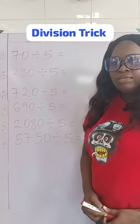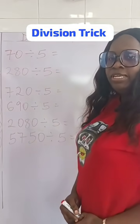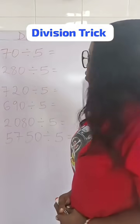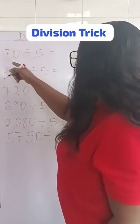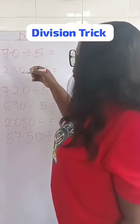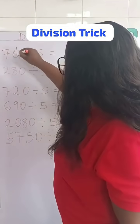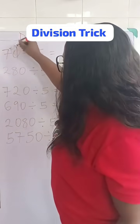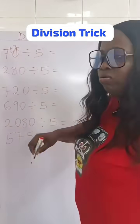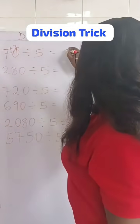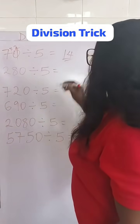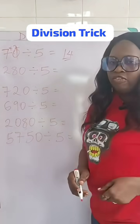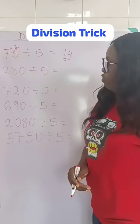Let's look at 70 divided by 5. How do we go about it? Instead of doing 70 divide by 5 the long way, just cancel the 0 and multiply 7 by 2, which is 7 times 2 equals 14. So we are going to have 14 as our answer. 70 divided by 5 is 14.